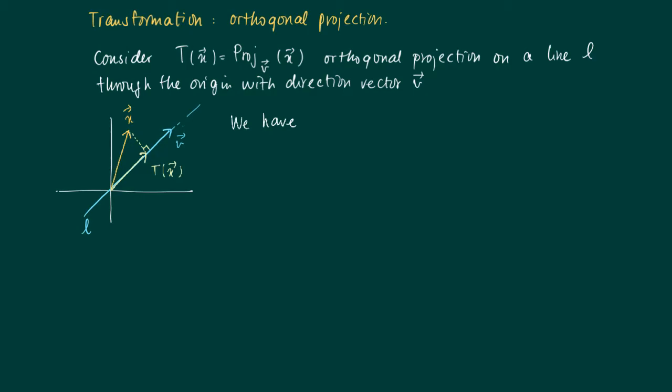Now we have, using the projection formula, T of x equals the dot product of v with x divided by v dot v. Well, this forms a scalar for v.